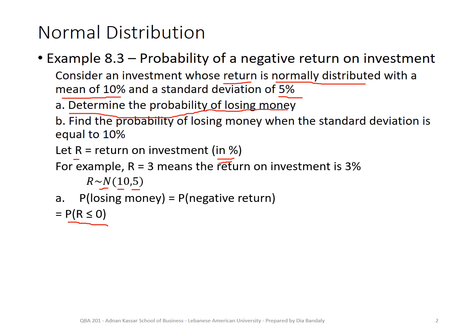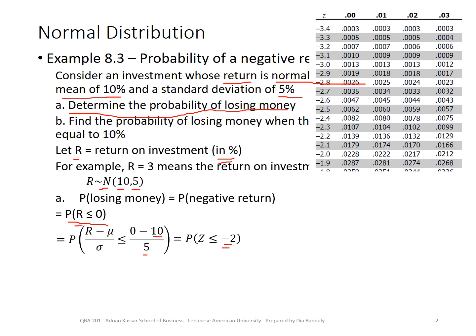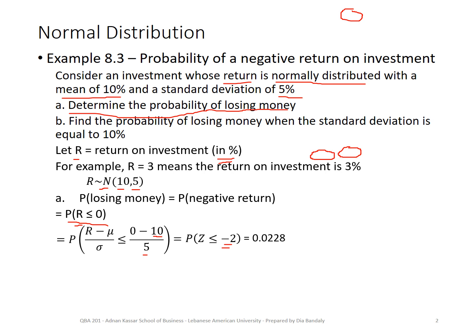Once you reach this probability statement stage, everything is simple. My next step is to standardize R: P((R − μ)/σ ≤ (0 − μ)/σ), where μ = 10 and σ = 5. This converts to P(Z ≤ (0 − 10)/5) = P(Z ≤ −2). Looking at the Z-table extract for Z = −2.0, column 0.00, we get 0.0228. So there is a 2.28% probability of losing money.